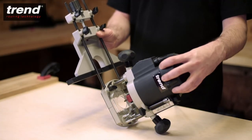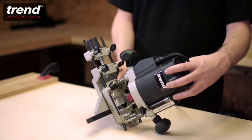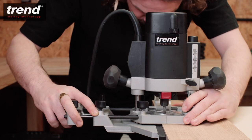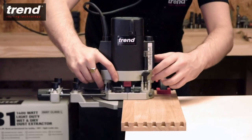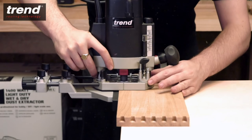The side fence included simply slides into the router base. It's used to guide the router along a straight edge when moulding, edge profiling, rebating and grooving.